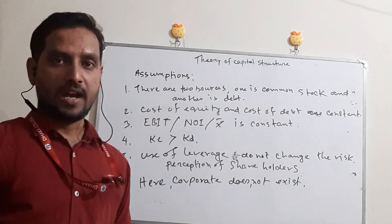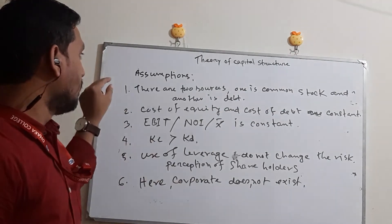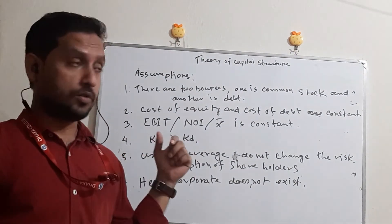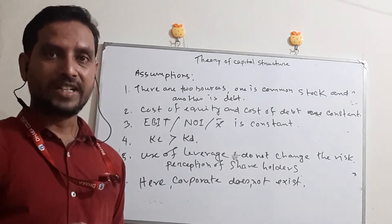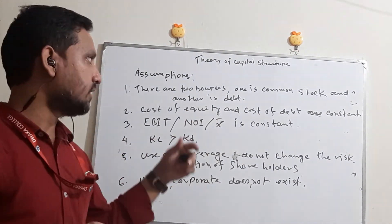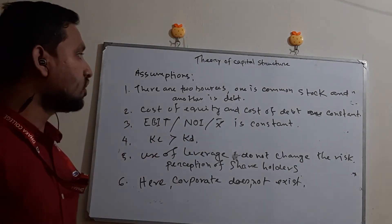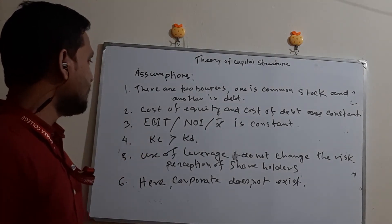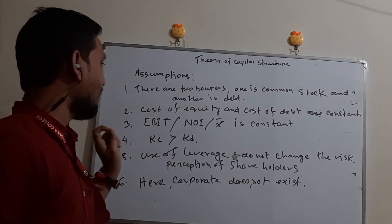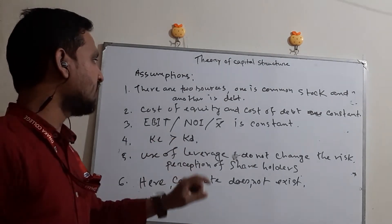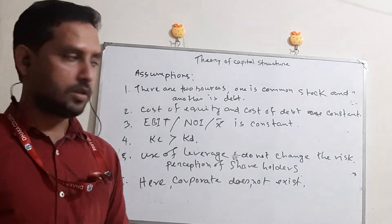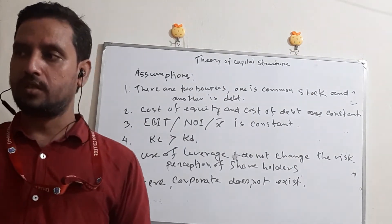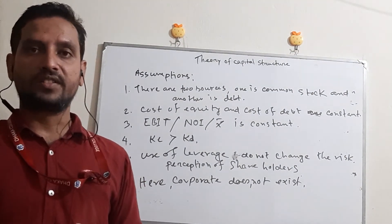So, there are six assumptions of the NI approach. First: there are two financial sources — common stock and debt or debenture. Second: cost of equity and cost of debt are always constant. Third: EBIT or NOI, net operating income, also called X-bar, is constant. Fourth: KE is always greater than KD — cost of equity is always greater than cost of debt.